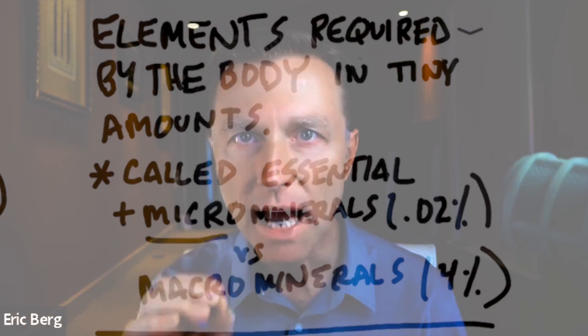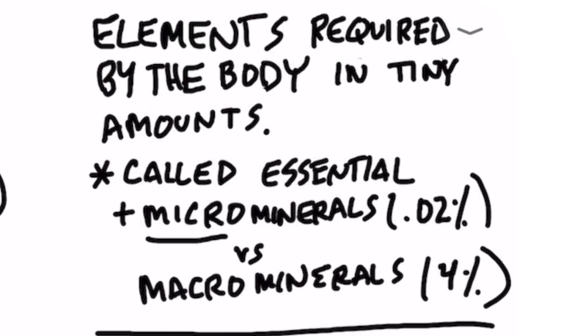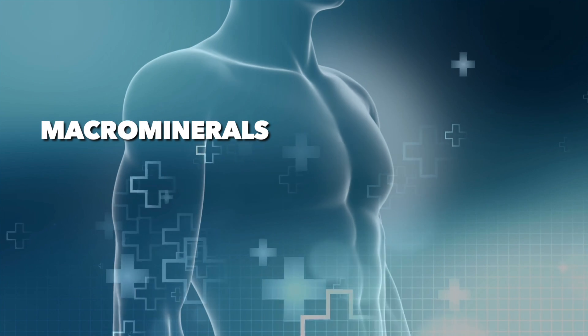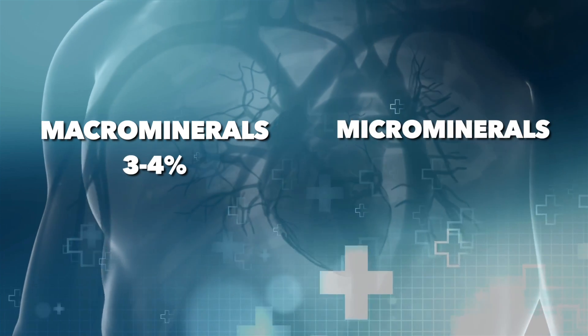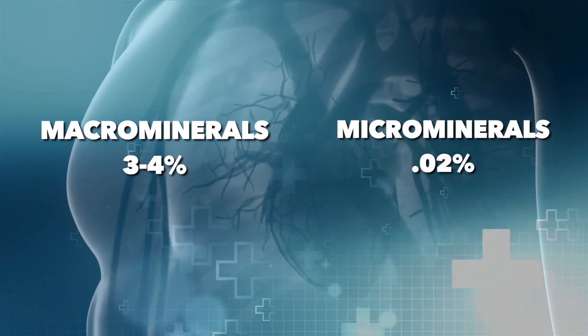You have these things called trace elements, which are minerals needed in very, very trace or small amounts — very tiny amounts. Another term for that would be micro minerals versus macro minerals, which you need in larger amounts, like usually above a hundred milligrams. So trace minerals are needed in tiny amounts, definitely below a hundred milligrams, but sometimes even in microgram amounts. The macro minerals make up about three to 4% of your entire body, and the micro minerals make up only about 0.02%.